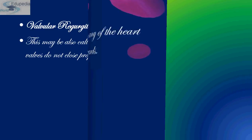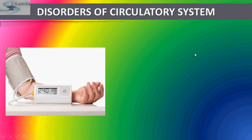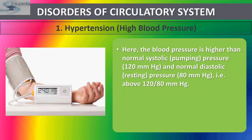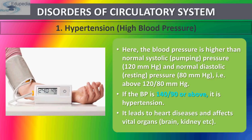Valve regurgitation occurs when any of the heart valves do not close properly and cause blood to flow backward. Now, disorders of the circulatory system — the first is hypertension. An increase in blood pressure above the normal level, that is above 150/110 mmHg, is known as hypertension. Extremely high blood pressure of about 220/120 mmHg may cause rupturing of blood vessels in the eyes, causing blindness.